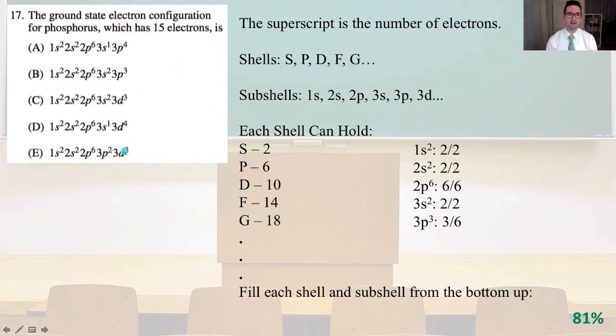Number 17, the ground state electron configuration for phosphorus, which has 15 electrons. The superscript is the number of electrons where our shells are S, P, D, F, G, and our subshells are 1s, 2s, 2p, 3s, 3p, 3d. Each shell can hold: S shell can hold 2, P shell can hold 6, D shell can hold 10, F shell can hold 14, G shell can hold 18. We're going to just fill each shell and subshell from the bottom up.